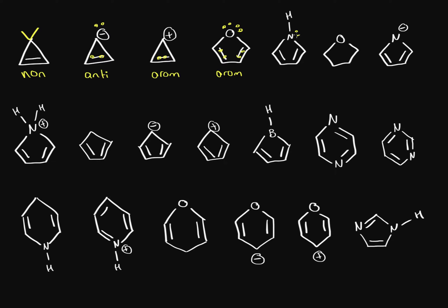On this nitrogen we have a lone pair and even though it looks like it's sp3, nitrogen does have a resonance form where it can form a double bond and this pi bond can become a lone pair. So nitrogen is sp2 hybridized and this lone pair exists in the p orbital. We have 1, 2, 3, 4, 5, 6 pi electrons. It follows the 4n+2 rule, so this is aromatic.